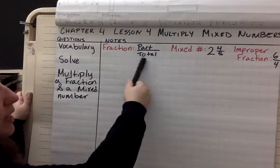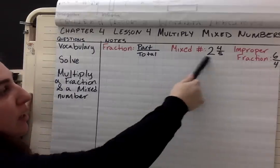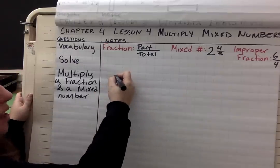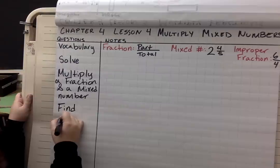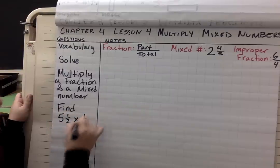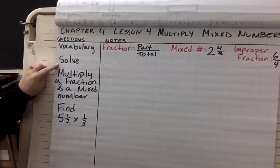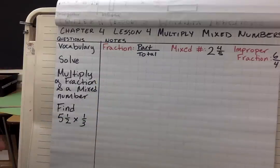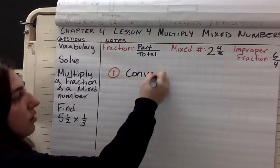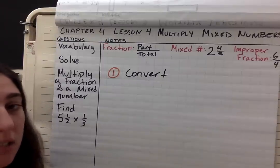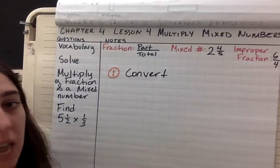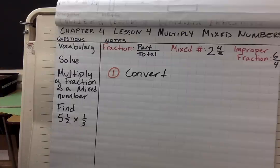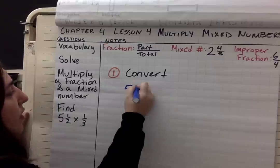We are going to multiply a fraction and a mixed number. A fraction might be an improper fraction that we're multiplying, and then our mixed number is going to look like that. So let's start off with some steps. We're going to find 5 and 1 half times 1 and 1 third. When it says find, it really means we want to solve. The first step is going to be to convert our mixed number.